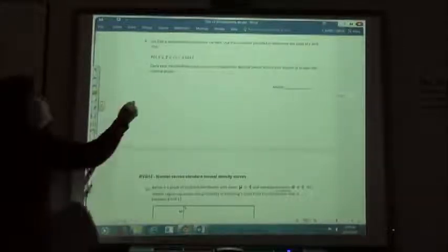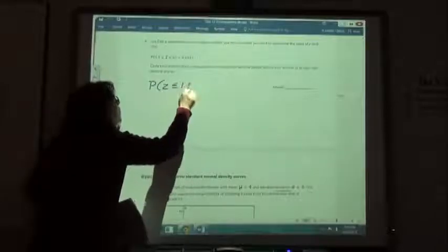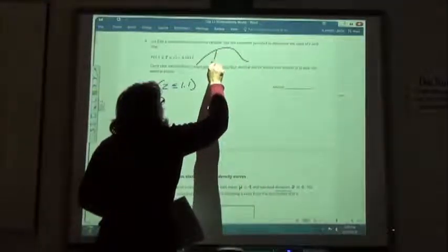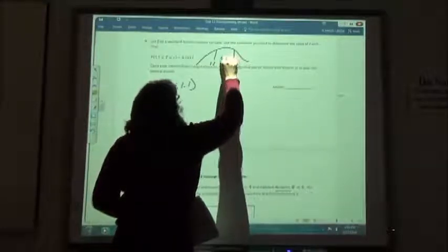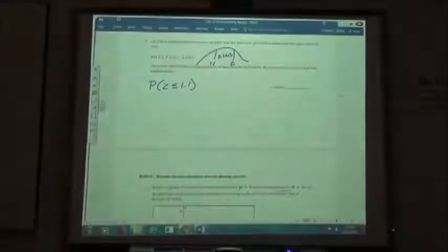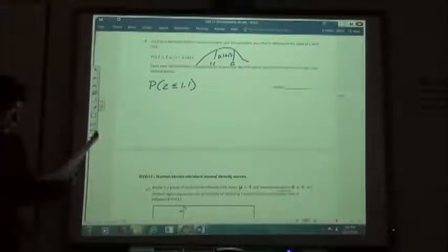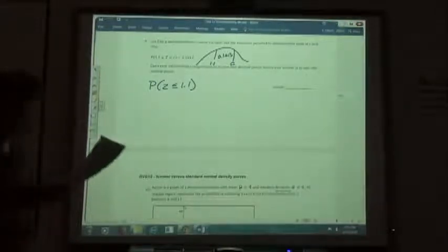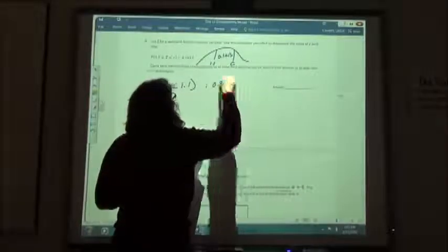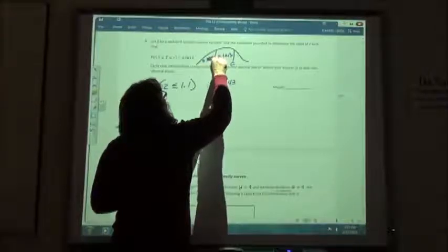So on number 9, first thing we're going to do, find the P of Z is less than or equal to the 1.1. So if you find that on your ALEKS calculator, P of Z is less than or equal to the 1.1, you get what number? 8643. Yep. 0.8643, which is the area in here. 8643, almost can't read that.